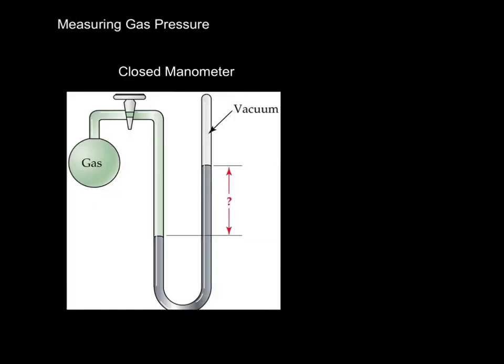We measure gas pressure. So let's say we have some gas in a tube, and we want to know its pressure. So the gas is pushing on this column of mercury. It's trying to push it down and up the tube. And since there's a vacuum here, there's nothing pushing back.